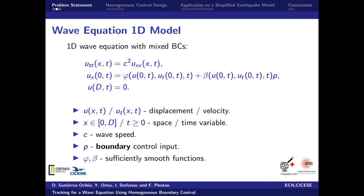This 1D wave equation has mixed boundary conditions. The first condition is a Dirichlet at x equal to 0, where the functions bar phi and beta are assumed to be sufficiently smooth and the boundary control p is located. The second one is a Neumann condition at x equal to d, representing an attached point.